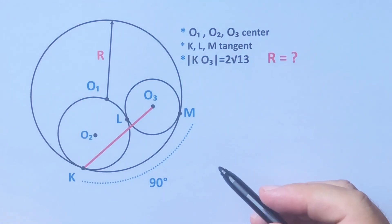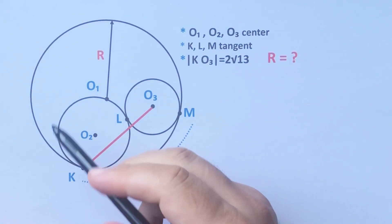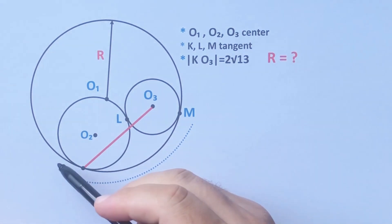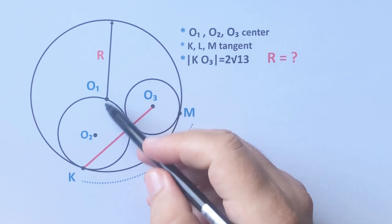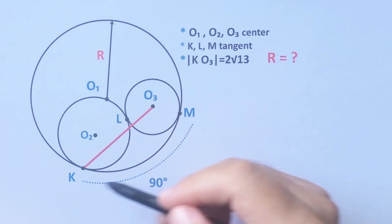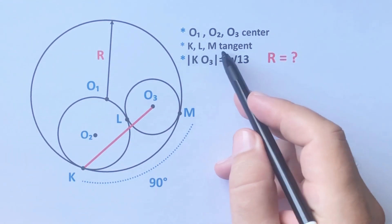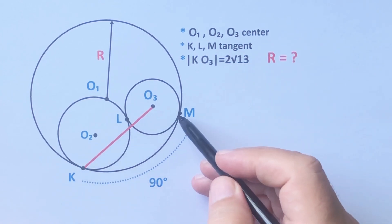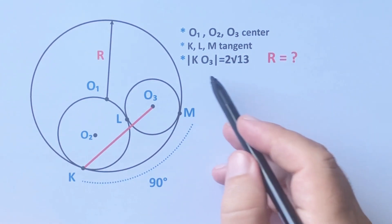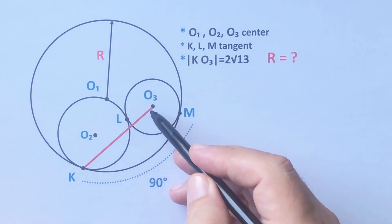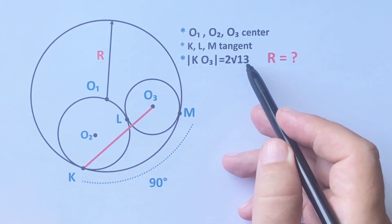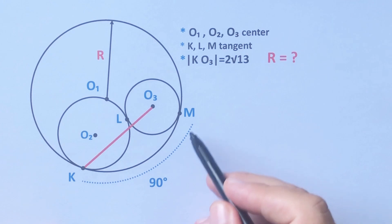Hello everyone, in this video we have three circles with O1, O2, O3 as center points and K, L, M as tangent points. The red arc equals root 13 and this arc equals 90 degrees.